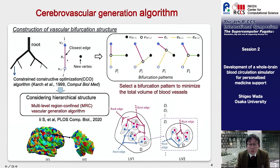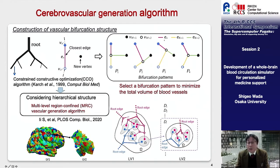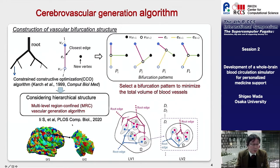This is a method to build a cerebral vascular model branching on the cortex surface. We employ the constrained constructive optimization algorithm proposed by Karch in 1999. In this algorithm, for each new point assigned in the space, vascular branches are generated to minimize the total volume of branch cells. New points are randomly selected from regions where the brain cortical surface is divided evenly. By dividing the region into sub-regions and applying the same algorithm, the hierarchical structure of the blood vessel is constructed.